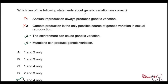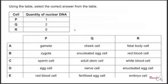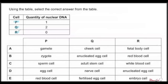Question two uses a table — select the correct answer from the table. We have three different cells P, Q, and R with different relative quantities of nuclear DNA. Q has double the DNA of P, and R has none. The only cell type with no nuclear DNA is a red blood cell, since red blood cells are just a bag of haemoglobin with no nucleus or internal organelles.